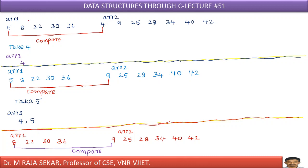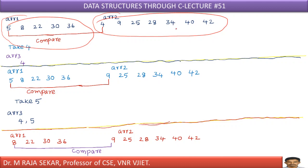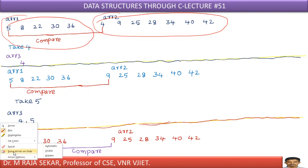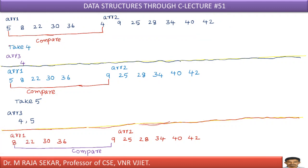I have the first array, arr1, which is the sorted array: 5, 8, 22, 30, 36. And another sorted array: 4, 9, 25, 28, 34, 40, 42. We have two sorted arrays. To combine them, compare the first element of arr1 with the first element of arr2 — that is 5 and 4. Which one is smaller? 4 is smaller than 5.